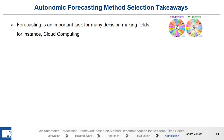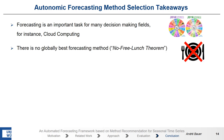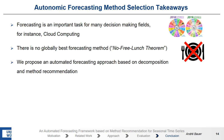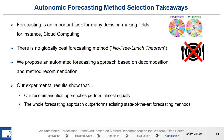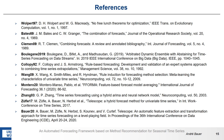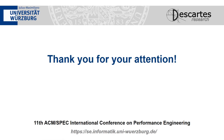Before I conclude, I want to sum up. We talked about how forecasting is an important task for many decision-making fields, for instance in cloud computing. The problem of choosing the best method is the no free lunch theorem, because there is no method that outperforms all others on a given time-series. Therefore, our idea was to propose an automated forecasting approach based on time-series decomposition and method recommendation. Our experimental results show that our recommendation approaches perform almost equally, and the whole approach outperforms existing state-of-the-art forecasting methods. These are the references of my work, and thank you for your attention.